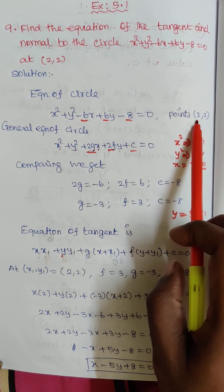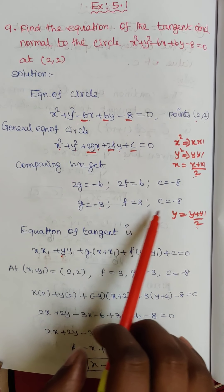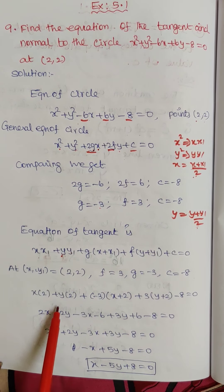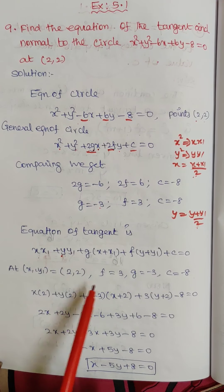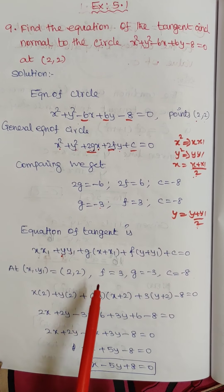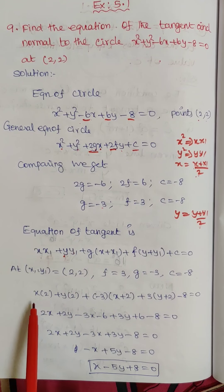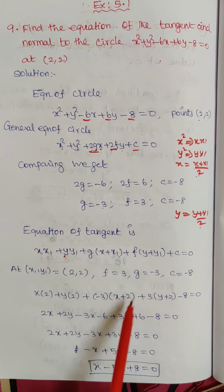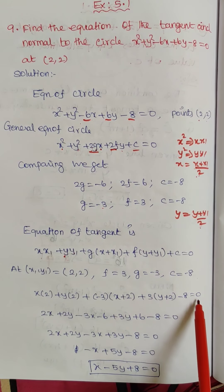The given point (x₁, y₁) is (2, 2), and g is minus 3, f is 3, and c is minus 8. Substituting: x into 2 plus y into 2, plus g value minus 3 into (x plus x₁, which is 2), plus f value 3 into (y plus y₁, which is 2), plus c equal to minus 8, equal to 0.